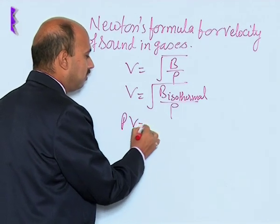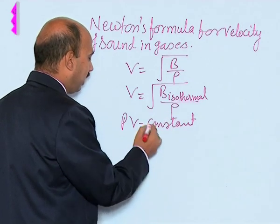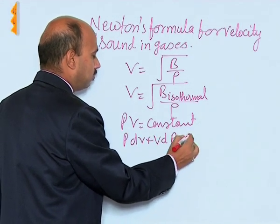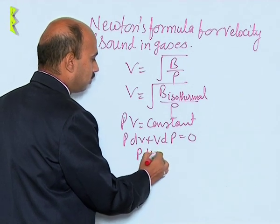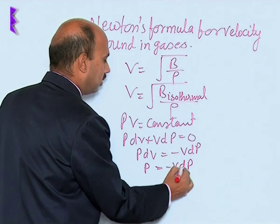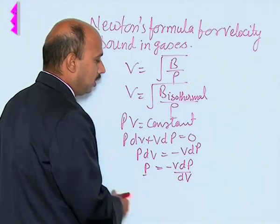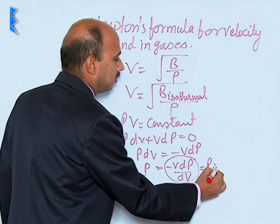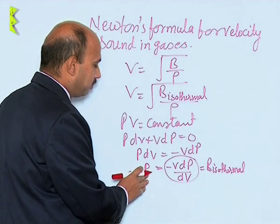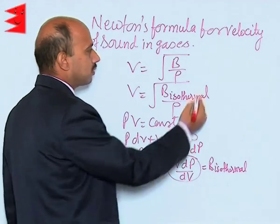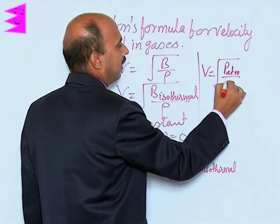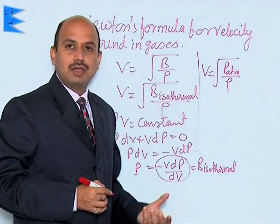For isothermal change we know PV = constant. Differentiating both sides gives P dV + V dP = 0, so P dV = −V dP, which gives P = −V dP/dV. This is equal to the bulk modulus B_isothermal. So in place of B we can write P, which here represents atmospheric pressure. Therefore, the velocity of sound in air is v = √(P/ρ), where P is atmospheric pressure and ρ is the density of the medium. This is the velocity of sound in air.